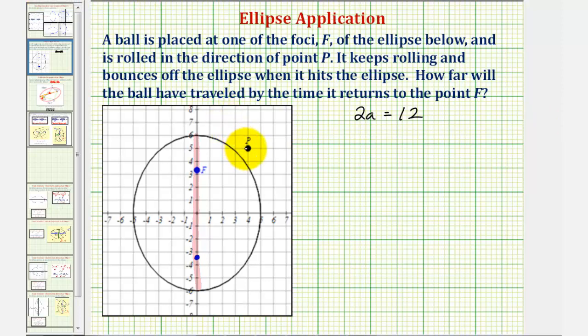And now if we roll the ball in the direction of point P, we can form a ray to show the path of the ball. Once it reaches the ellipse though, it'll bounce back and return to the other focus, this focus here. Which means for this path, the ball has traveled 12 units.